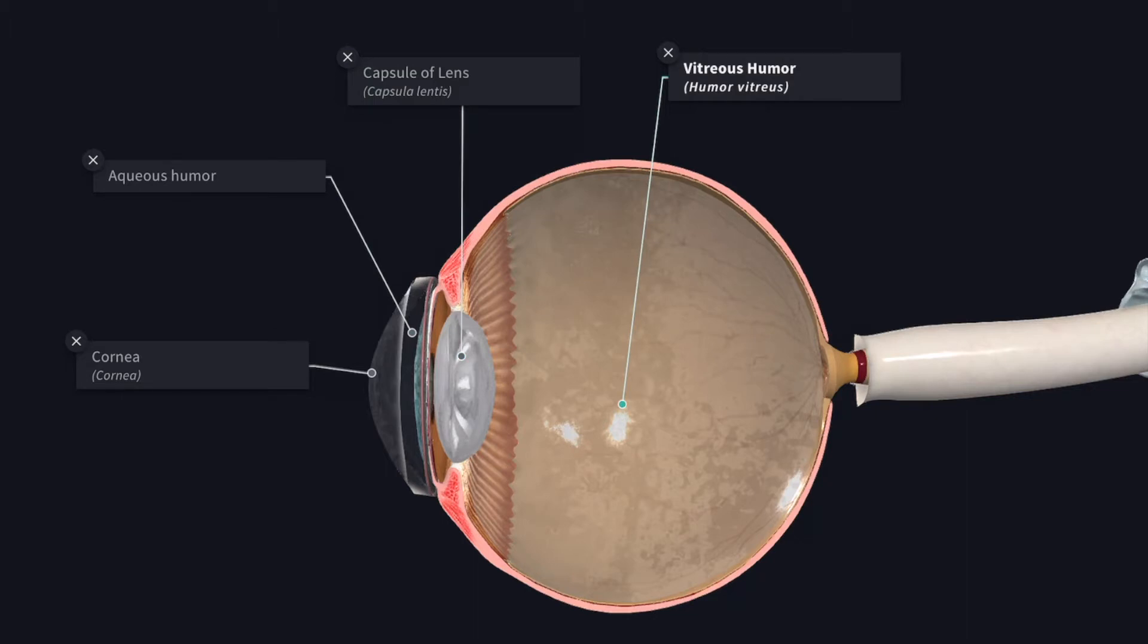About two-thirds of the refraction of light takes place by the front surface of the cornea at the junction of the air and the corneal epithelium. We have seen cornea in detail in the outer tunic of the eyeball. The link will be given in the description.